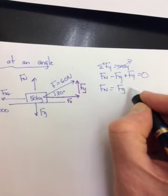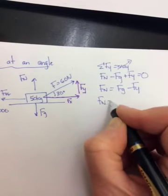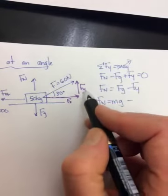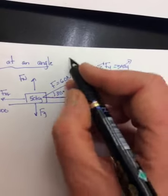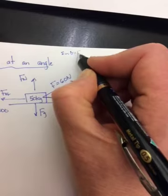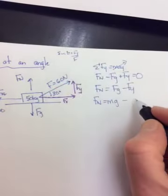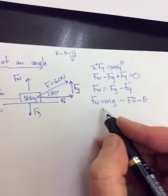So it'll become fg minus fy. But what is fg really? It's mg. And what is fy really? When we look at the triangle, it's the opposite side. So it should be, and if you need to, you could go and say, it's going to be sine theta equal to fy over f. And then rearrange for fy. It'll be f sine theta.